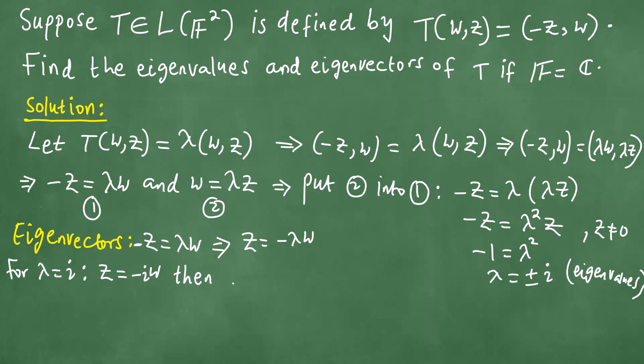It follows that the eigenvector (w,z) becomes (w, -iw), which equals w times (1, -i).